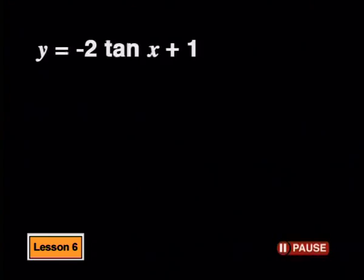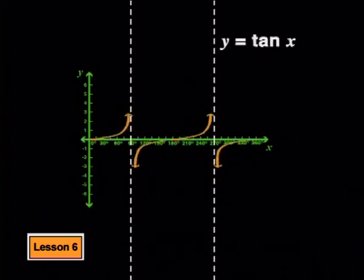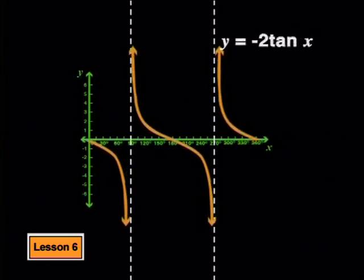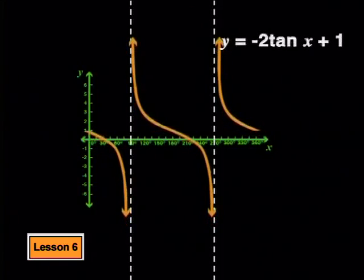Now you should be able to predict how the tan parent graph changes with adjustments to a and q. Try sketching y equals negative 2 tan x plus 1. One way is to reflect the parent graph first, giving y equals negative tan x. Next, multiply each point by 2 to stretch the graph by a factor of 2 — choose a few points, multiply their y values by 2, and plot the new points. Finally, shift the whole graph up by 1 unit to get the final graph.